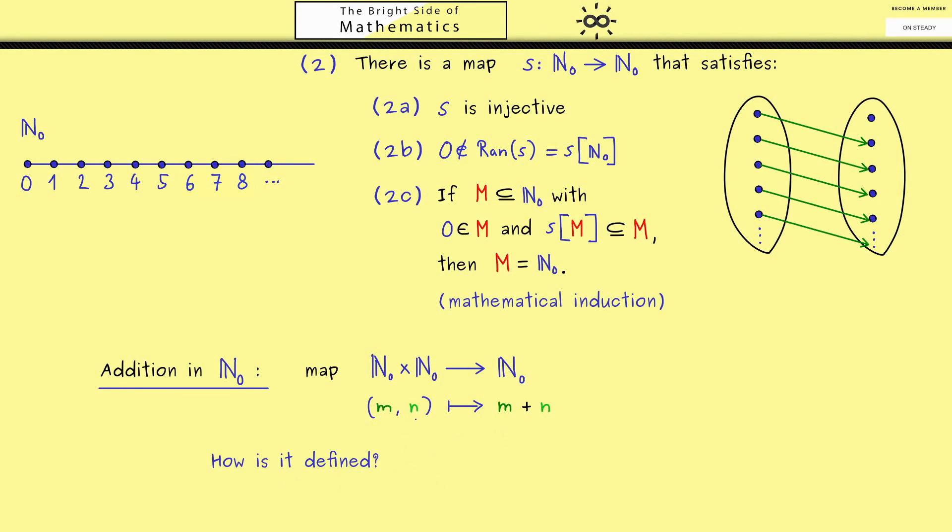For example, we could just define 2 + 4 = 6. So this would be one way to define a map: just write down all outputs for all possible inputs. However, this is not feasible here because we have infinitely many inputs and not enough space to write them all down.